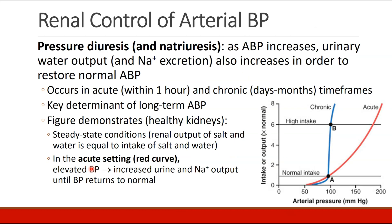Now that we've discussed nervous system controls of blood pressure, we'll discuss renal controls. The topic is called pressure diuresis and natriuresis — in other words, pressure causing loss of water (diuresis) and loss of sodium (natriuresis). As blood pressure increases, urinary water output and sodium excretion will increase in order to restore normal blood pressure. This can occur within an hour.